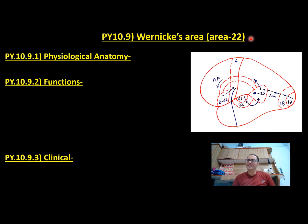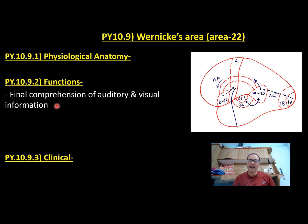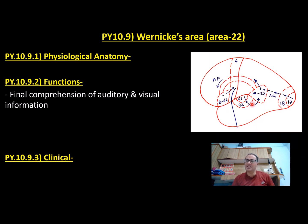Let's do Wernicke's area, competency number P 10.9, covering three headings. The first important function is Wernicke's area does final comprehension of auditory and visual information. Whatever we hear or see, all that information finally reaches Wernicke's area, which makes complete meaning of it. It gets inputs from multiple areas — especially auditory association area, visual association area, and sensory association area — and by associating all this information, Wernicke's area makes meaning of that auditory or visual input.